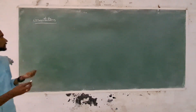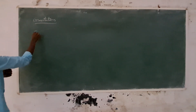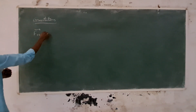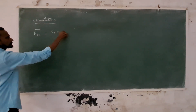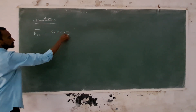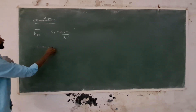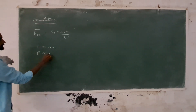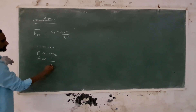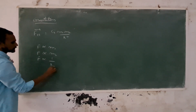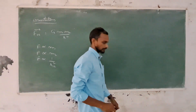Simple rule: the force between any two objects is proportional to the mass of the first object and the mass of the second object, and is inversely proportional to the square of the distance between them.